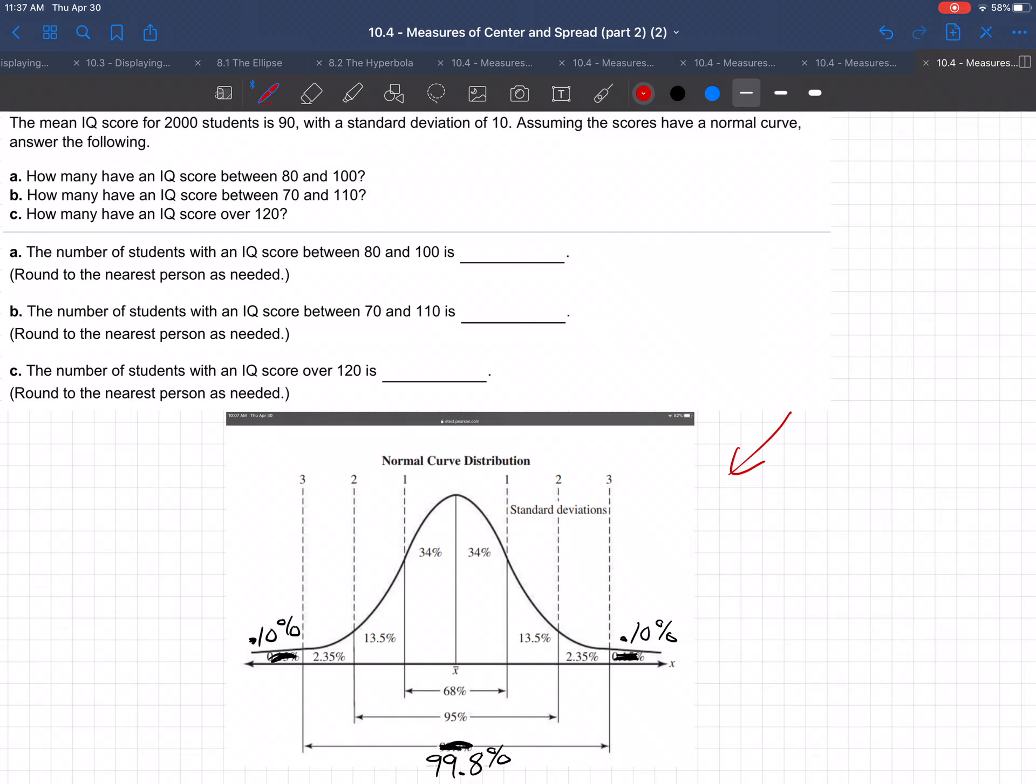So how do we do this? So the mean for these 2,000 students is 90, so that's the middle. So that goes right here. That's the X bar, that's the middle. It's the average, the mean, the middle.